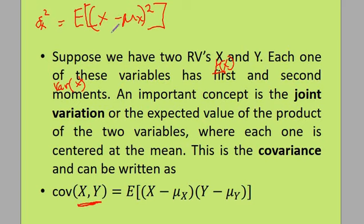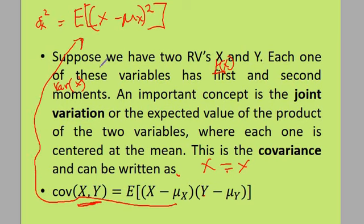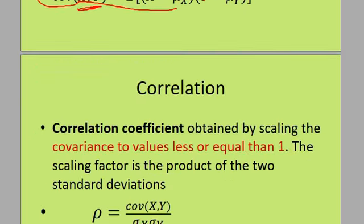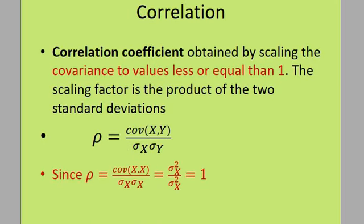Now that we are going to two variables, we have separated them this way — we are multiplying the deviation of X and the deviation of Y. If X is equal to Y, this formula reduces to the variance. The covariance of a single variable is the same as the variance. The correlation coefficient is obtained by scaling the covariance, and is given by the covariance divided by the product of the standard deviation of X times the standard deviation of Y.